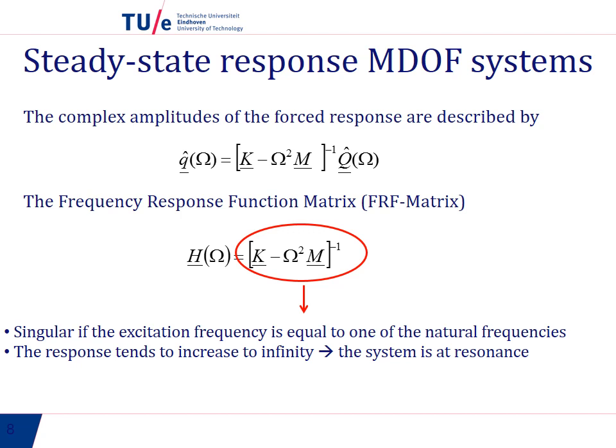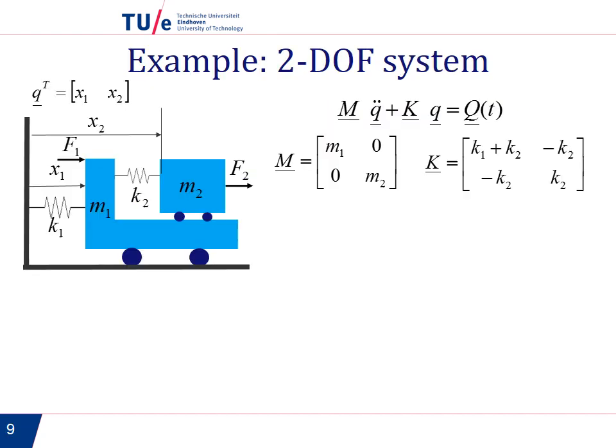So let us look at this matrix with an example. And the example we will consider is this two DOF system. You see we have two masses. Mass 1 is connected to the fixed world with a spring k1, and mass 2 is connected to mass 1 with a spring k2. And x1 and x2 are absolute coordinates. x2 is defined with respect to the fixed world.